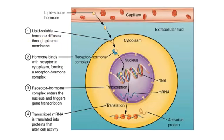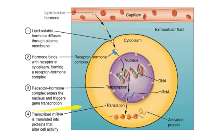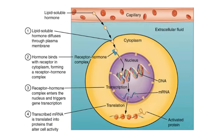Step by step: first, the lipid-soluble hormone diffuses across the plasma membrane and interacts with the cytosolic steroid receptor, which is bound to heat shock protein in its inactive state; HSP then detaches, forming a receptor-hormone complex. Next, the receptor-hormone complex enters the nucleus and triggers gene transcription. Then the transcribed mRNA is translated into protein that alters cell activity, producing the physiological effect in response to that particular steroid hormone.